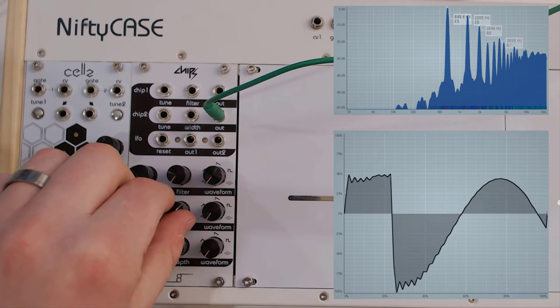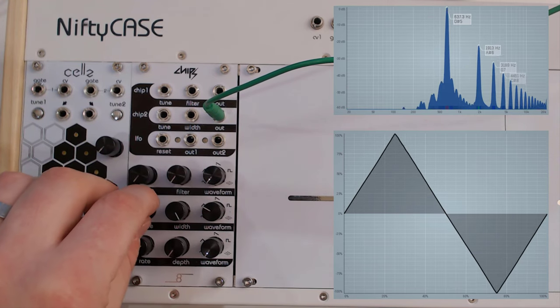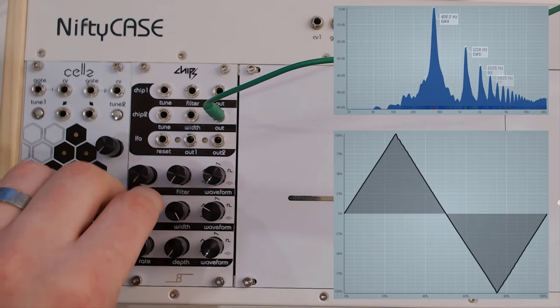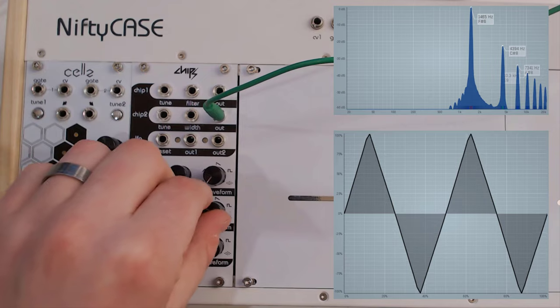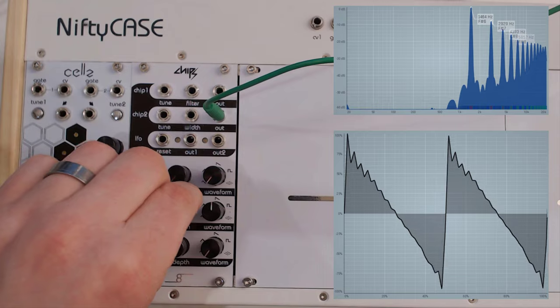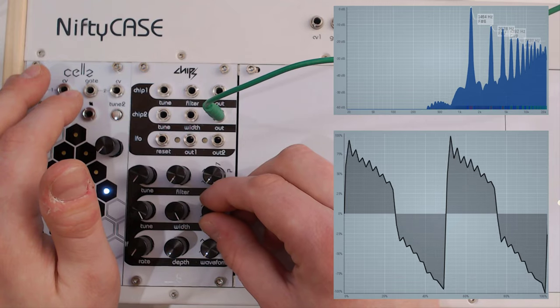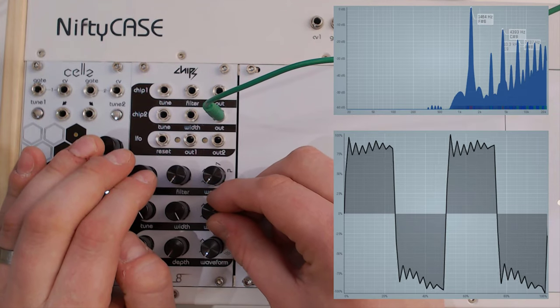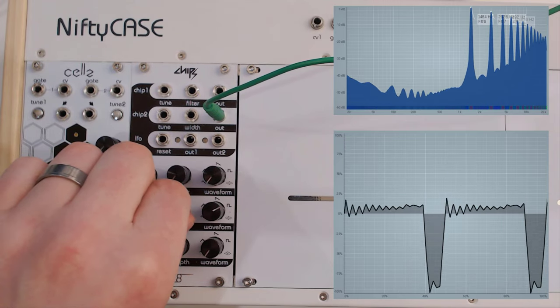Same is true for triangle. As you can see, this triangle looks already much better than the one on Chip 1. But again, you do have that digital aspect to it. Then you've got your pulse with pulse width modulation that you were all expecting.